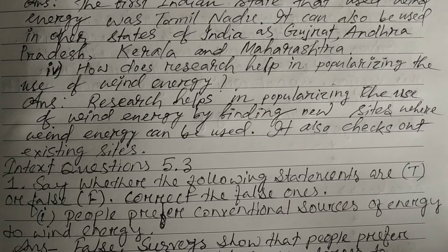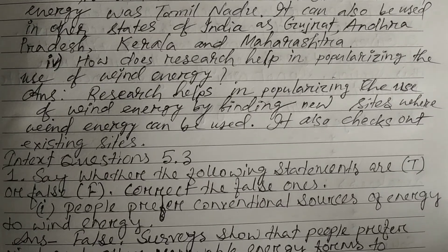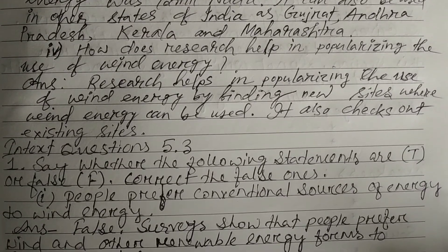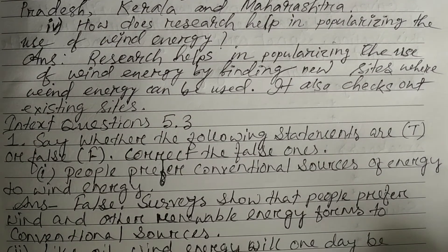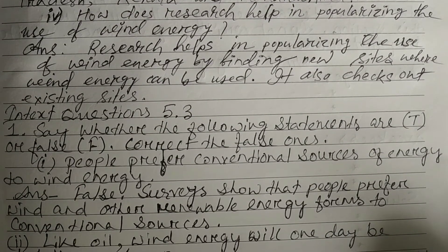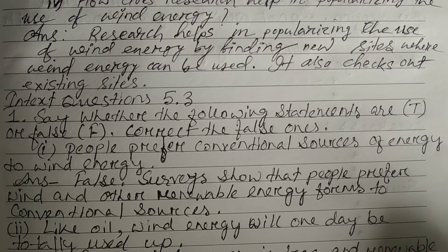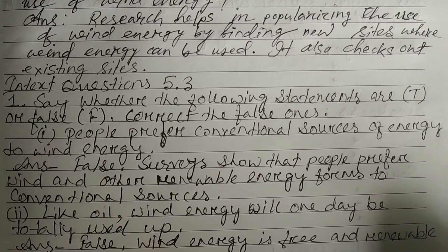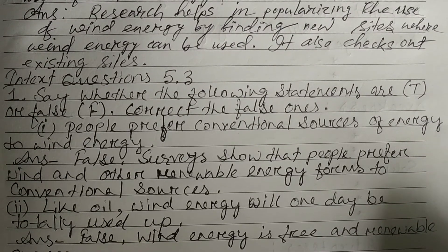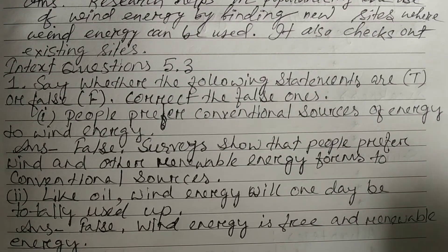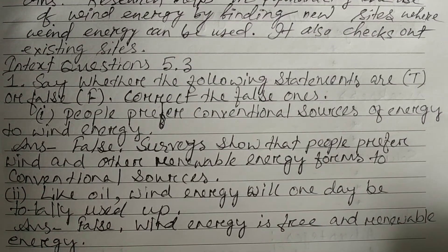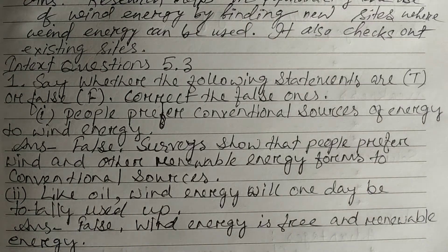In-text questions 5.3. Say whether the following statements are true or false. Correct the false ones. Statement 1: People prefer conventional sources of energy to wind energy. Answer: False. Surveys show that people prefer wind and other renewable energy forms to conventional sources. Statement 2: Like oil, wind energy will one day be totally used up. Answer: False.